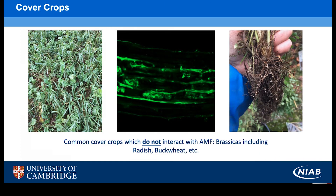One way of influencing mycorrhizal populations in the soil is with cover crops, which are plants grown outside of regular crop production for the purpose of protecting or improving soils. Many cover crops do interact with AM fungi, with notable exceptions including brassicas, radishes, buckwheat and a few others.